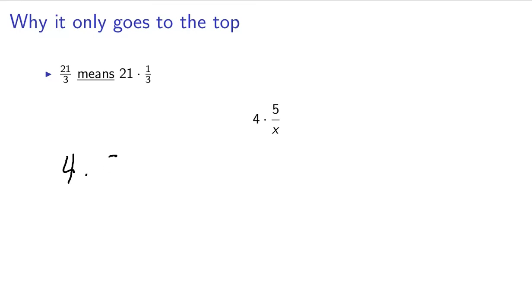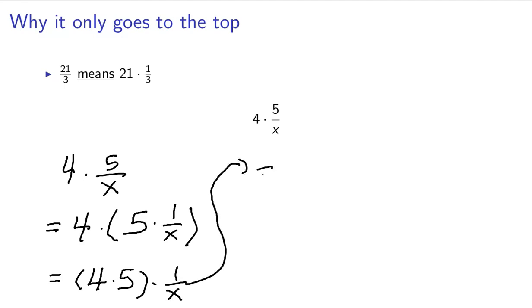4 times 5 over x. Well, this means 5 times 1 over x. And then using the associative property, and I don't know if you remember the term associative property, but remember that this will be the same thing as 4 times 5 times 1 over x. And 4 times 5 is 20.